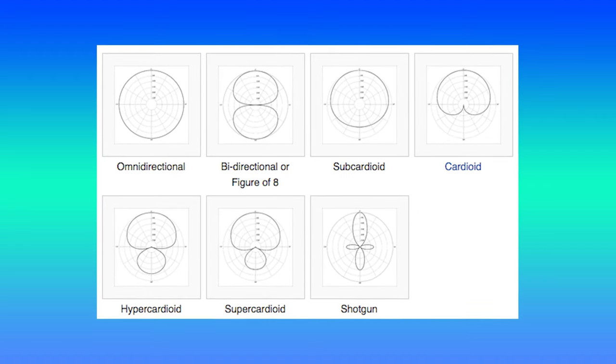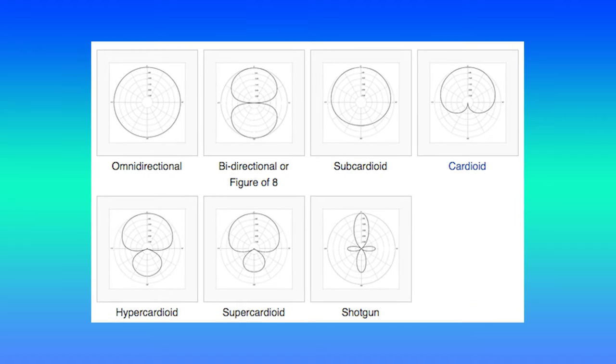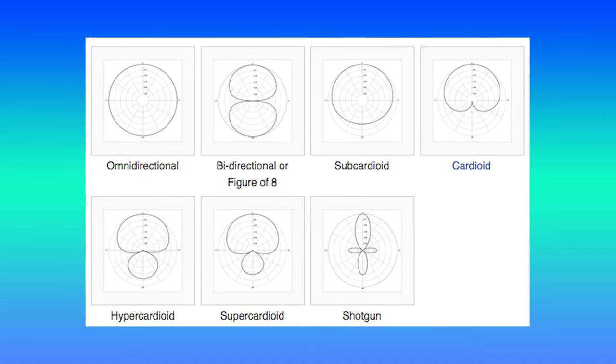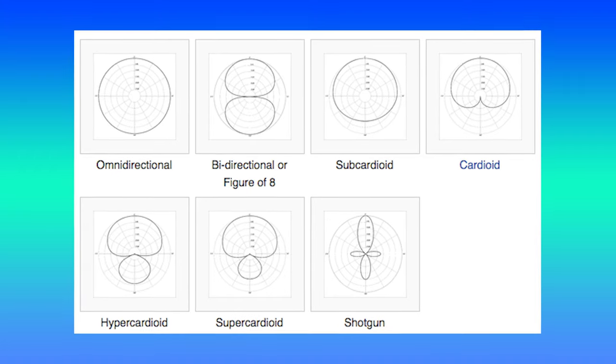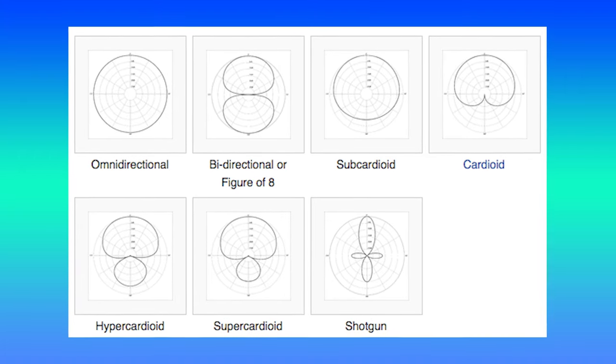Microphones are generally split into three types called omnidirectional, cardioid, and super cardioid. These variants each have different use cases based on where the sound is coming from and other required audio properties. Microphones are an increasingly prominent part of our lives that we get to enjoy thanks to the creative individuals of the 19th century.